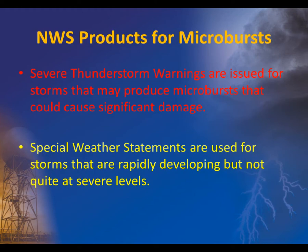The National Weather Service doesn't issue a product specifically for microbursts. However, severe thunderstorm warnings are issued for cases when microbursts are expected to cause significant damage. For rapidly developing storms not at severe levels, which may produce weaker downbursts, special weather statements are issued.